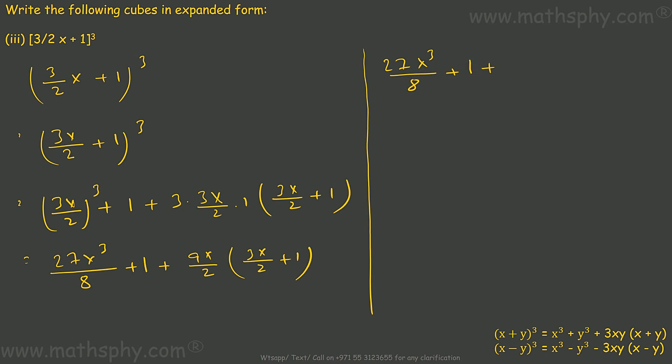Into 3x, into 3x gives 27x square over 2 into 2 is 4, plus 9x over 2 into 1, plus 9x over 2.